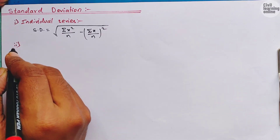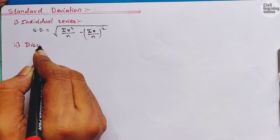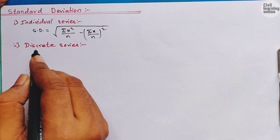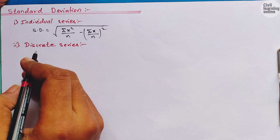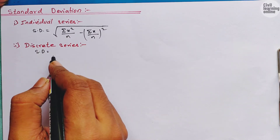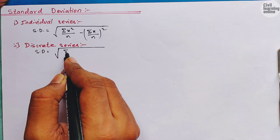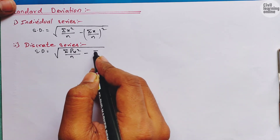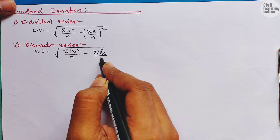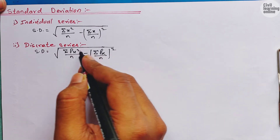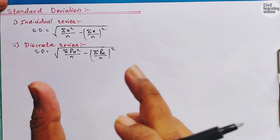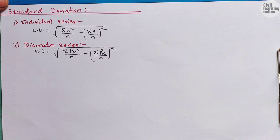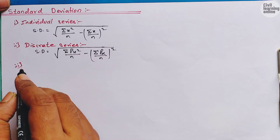The second one is discrete series. For discrete series, the formula for calculating standard deviation is also similar with a small addition: SD = √(Σfx²/n − (Σfx/n)²). Here f represents the frequency, meaning how many times the given mark or class is repeated — that is the frequency of repetition.